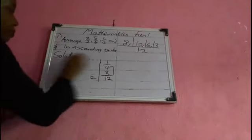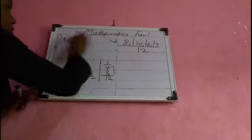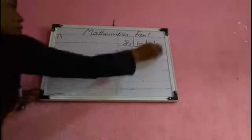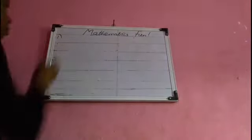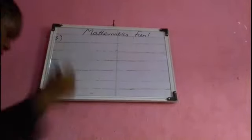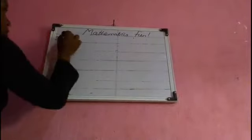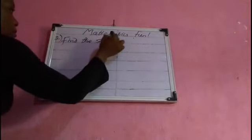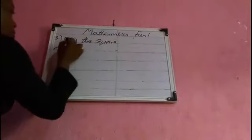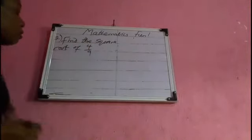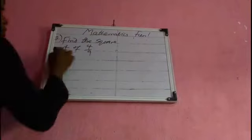Number two: find the square root of four over nine. This shouldn't be difficult.